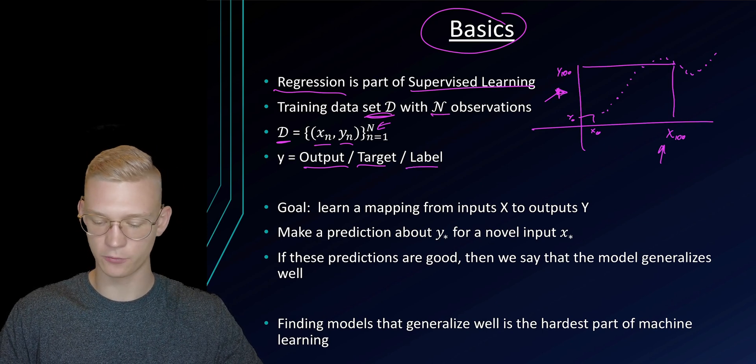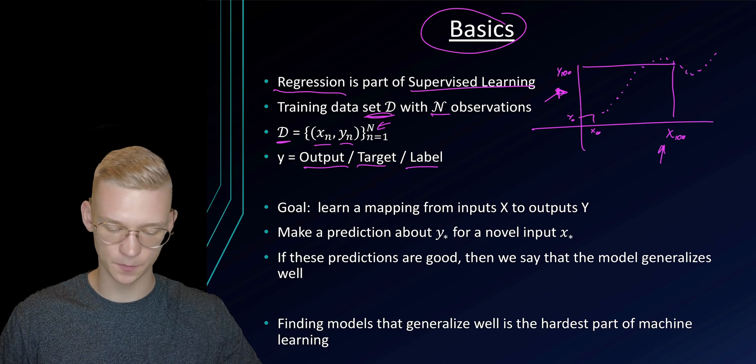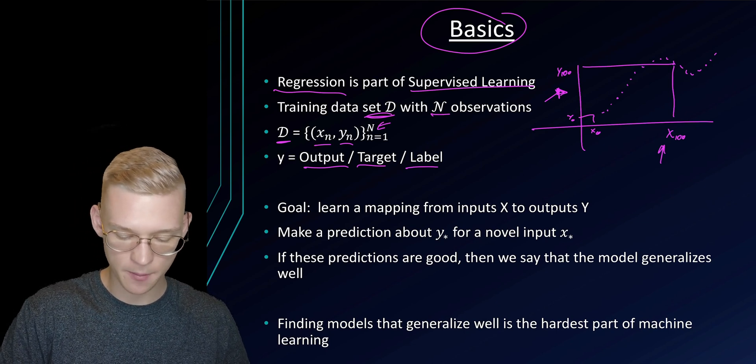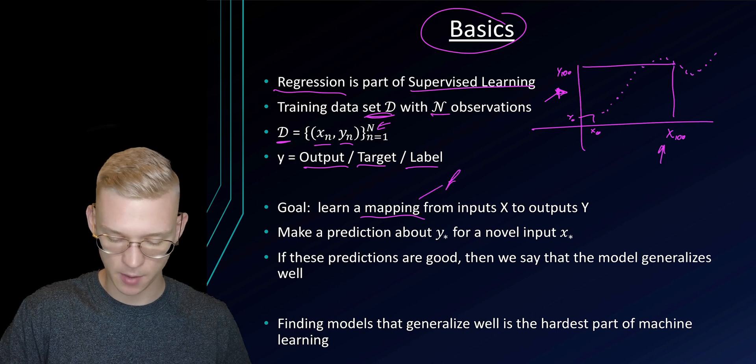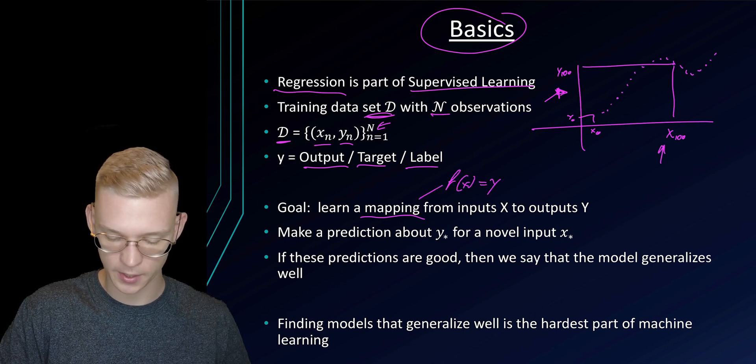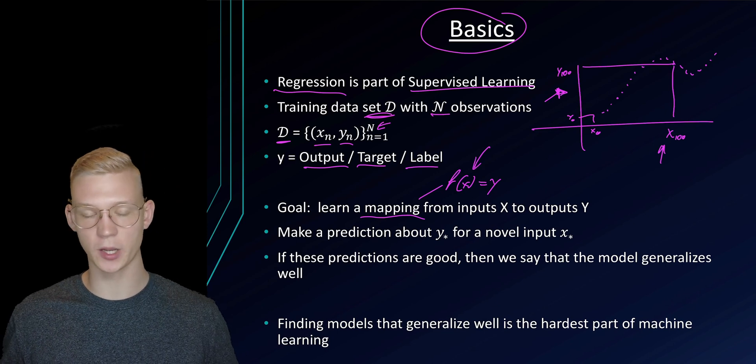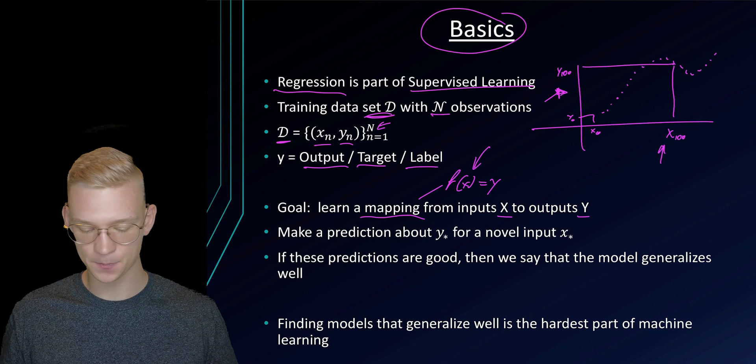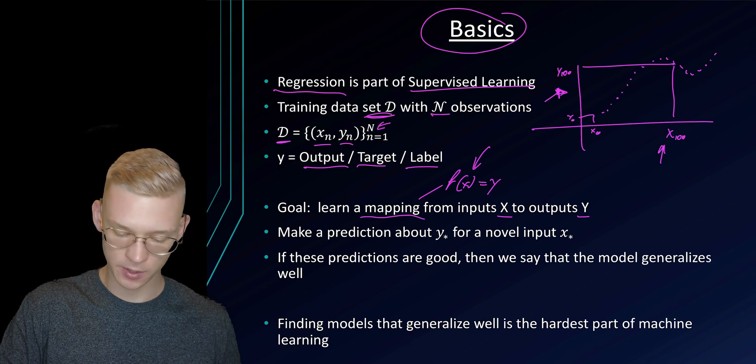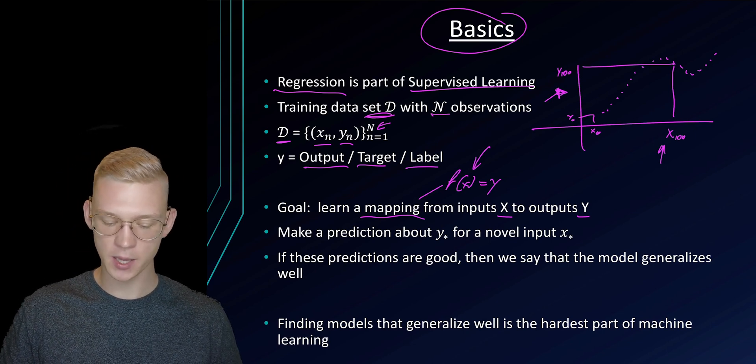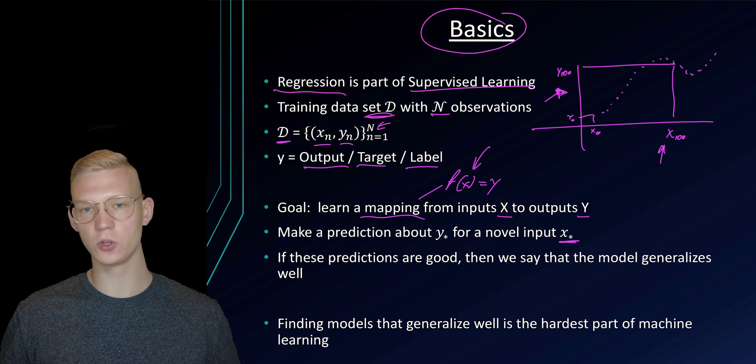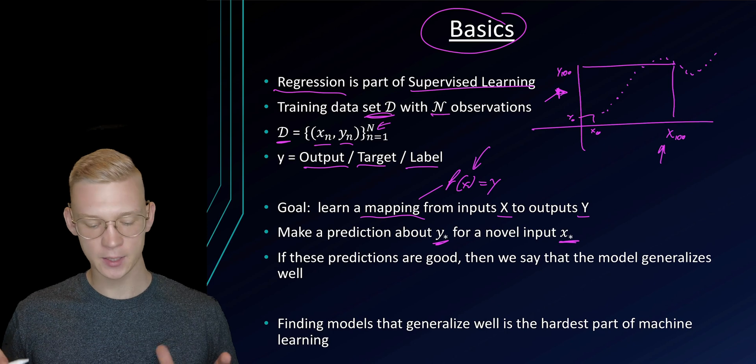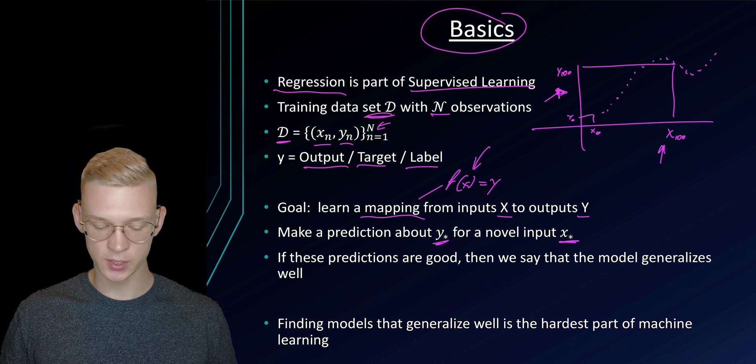So that's what we get—for every input we get one output. And now our goal is to learn a mapping function. So a mapping of f(x) is equal to y. So this f(x) is what we are trying to learn—a mapping from inputs x to outputs y. As soon as we learn this function f(x) we can make a prediction. If we input a new x*, we will get a y*. And if these predictions are good.